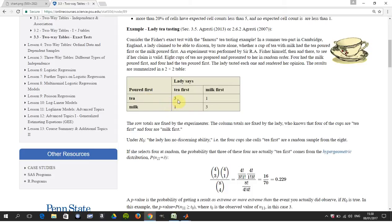So Fisher did the test here, the tea and the milk, and the lady said three times tea first and then one milk, and then one and then three. So the rows are fixed, the rows are the knowns and the columns are the dependent variable.